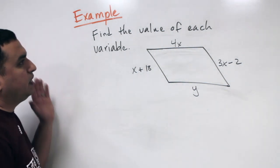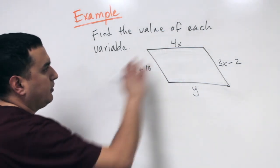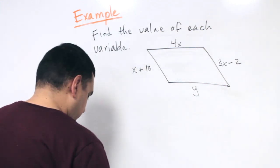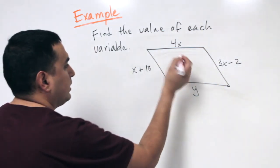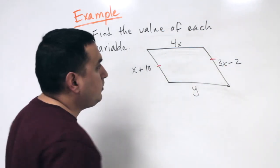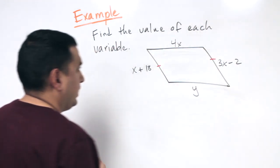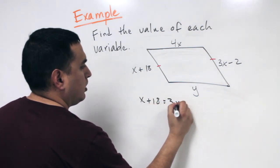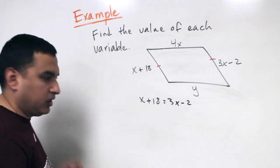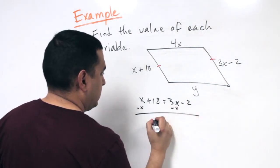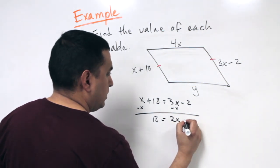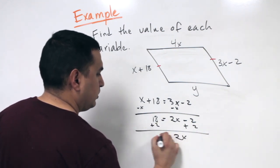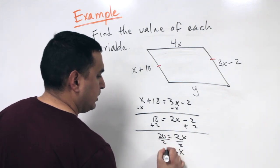On our first example, we want to find the value of each variable. They gave us a parallelogram with variables — three of them have X's and one has a Y. Because opposite sides are congruent, X plus 18 has to equal 3X minus 2. Subtracting X from both sides gives 18 equals 2X minus 2. Adding 2 to both sides gives 2X equals 20. Dividing by 2 tells me X equals 10.